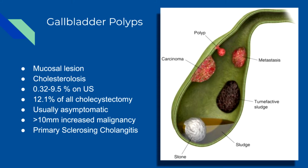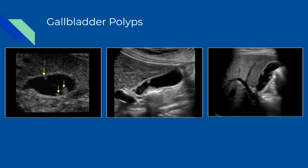Other benign types are adenomas, focal adenomyomatosis, and inflammatory hyperplasia. The other types are malignant. Primary sclerosing cholangitis is a risk factor for malignancy in the presence of polyps, especially rapid growing ones.